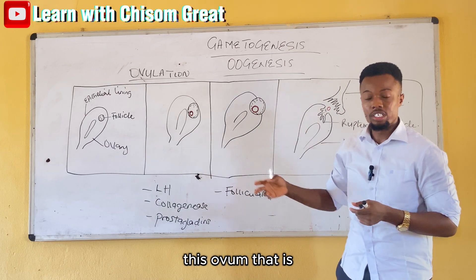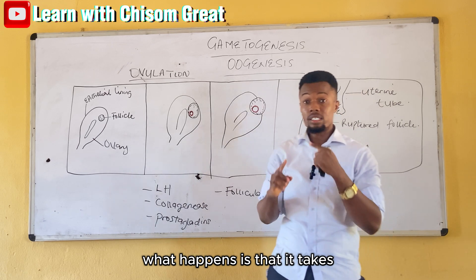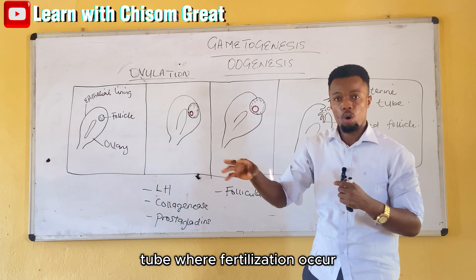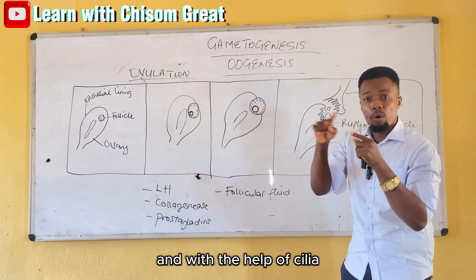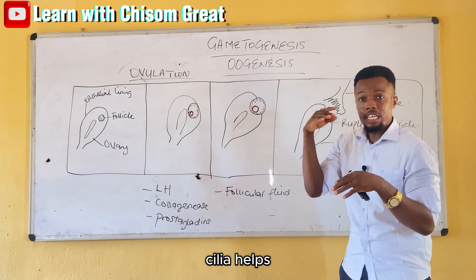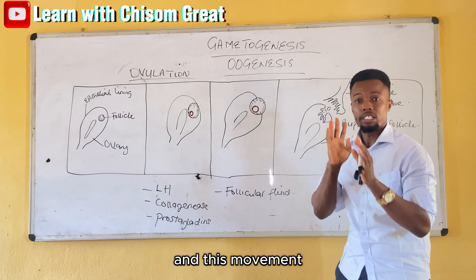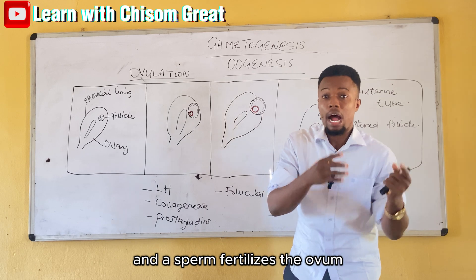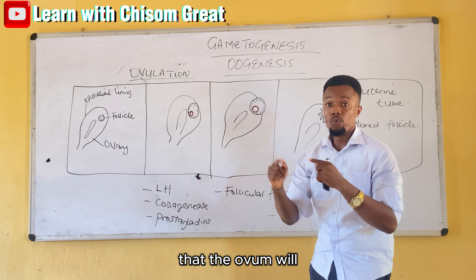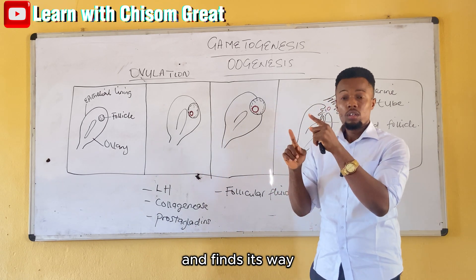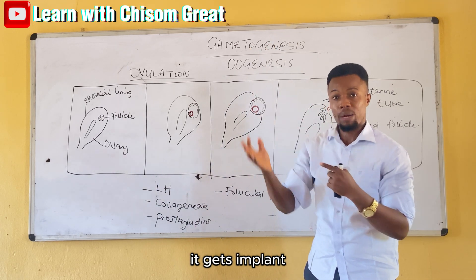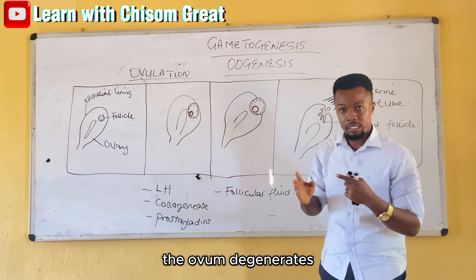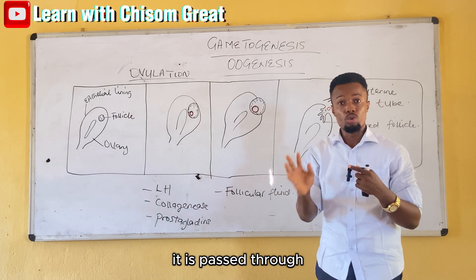It takes 3 to 4 days for the ovum to travel to the ampulla — the part of the uterine tube where fertilization occurs. Cilia found in the lumen of the uterine tube help move the ovum down to the ampulla. If fertilization happens, the fertilized ovum leaves the ampulla and finds its way to the uterus where it gets implanted. If fertilization does not occur, the ovum degenerates after 24 hours and is passed through the vaginal canal.